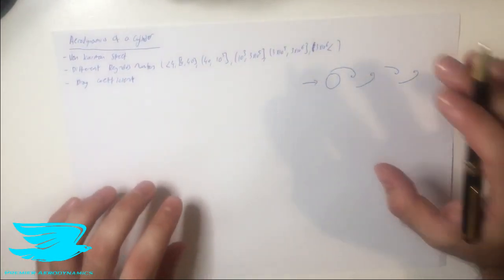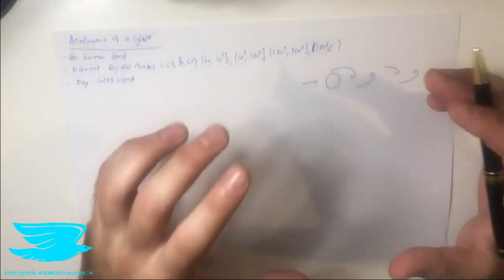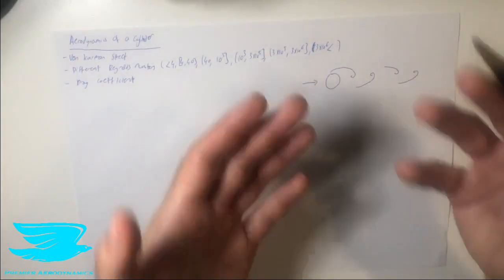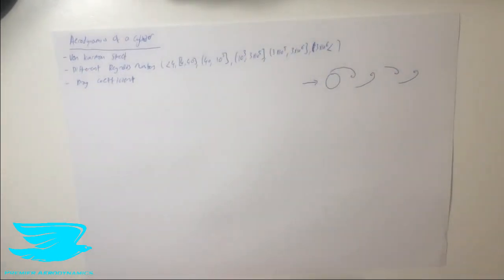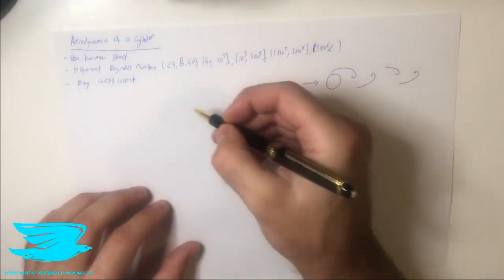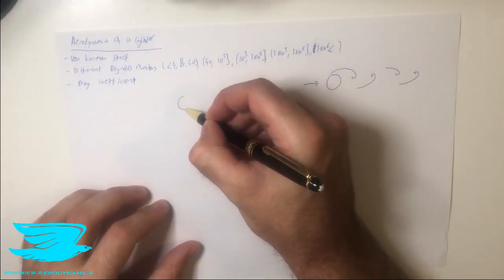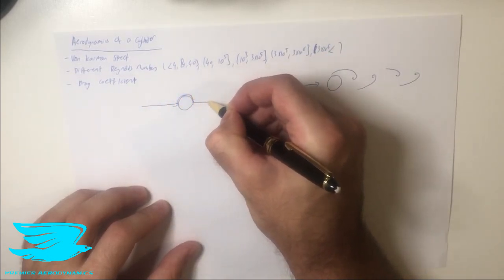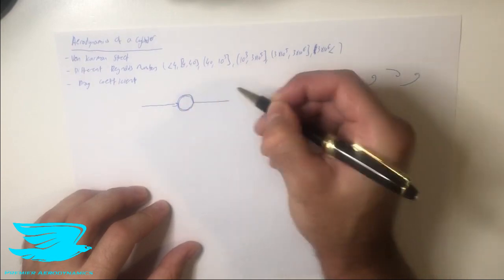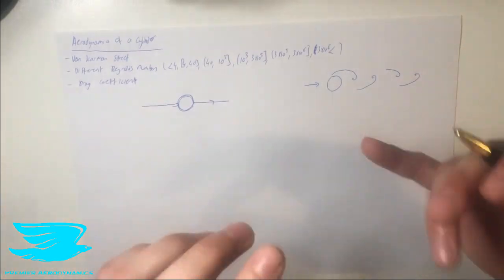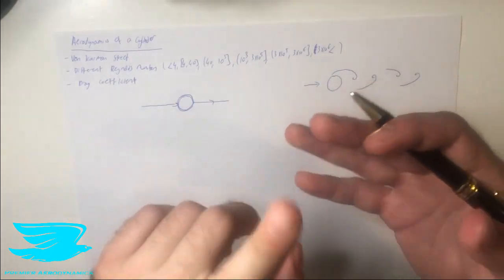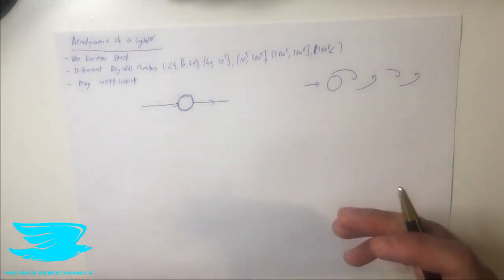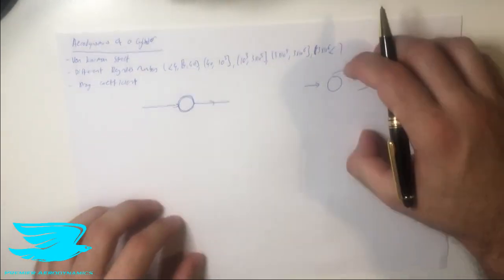Despite the von Kármán street probably being the most well-known phenomenon, the cylinder does not always produce one. This is where we get into the different Reynolds numbers and how they affect the flow physics over a cylinder. Starting with a super low Reynolds number — below four — the flow comes in, goes over the cylinder, stays attached, and goes downstream. This is called potential flow, inviscid flow, or Stokes flow — effectively the same thing in this situation. The fluid stays attached with no von Kármán street forming.